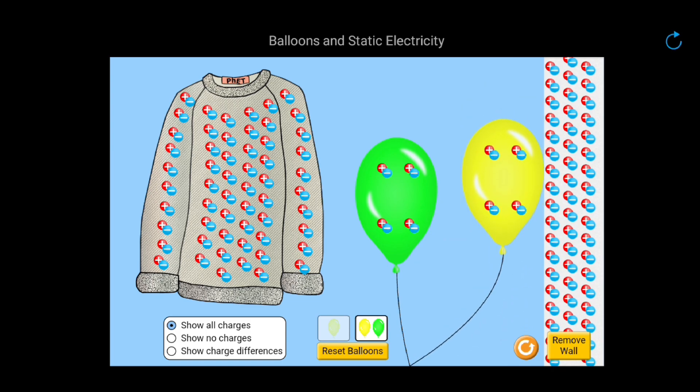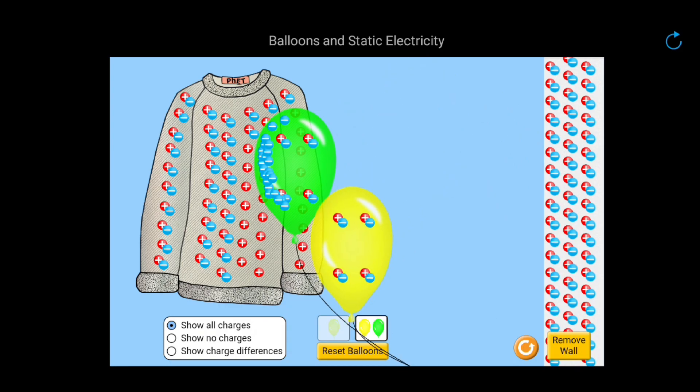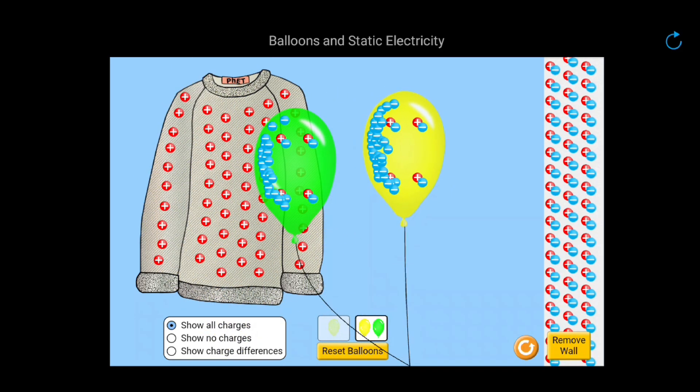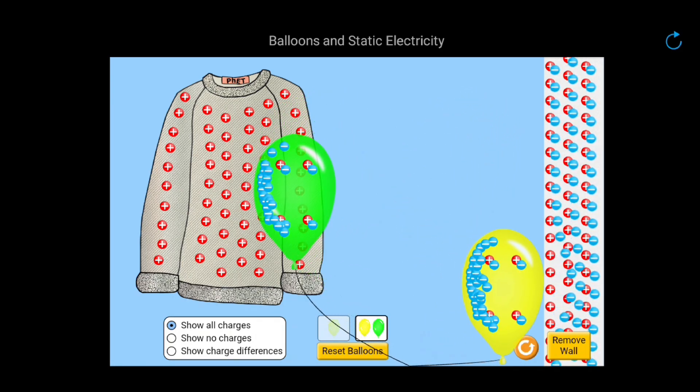When we rub both balloons with the cloth, they both become negatively charged. Just like before, electrons are transferred, and both balloons now repel electrons in the wall. Also, they both will repel each other, as they both are now negatively charged.